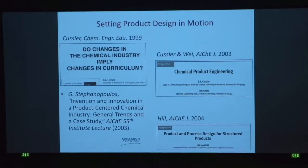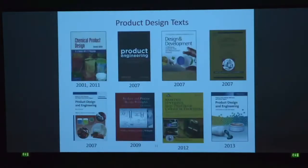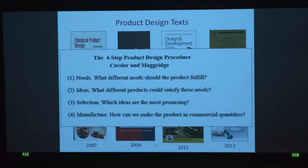This field was set in motion about 15 to 17 years ago by Ed Kessler and George Stephanopoulos — at that time he was still at Mitsubishi. We also had Jimmy Wei, Michael Hill, among many others. After that, textbooks on product design were published. By now, many of our seniors would know the four-step procedure proposed by Kessler and Morvich: needs, ideas, selection, and manufacture.